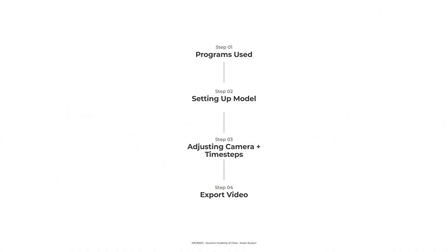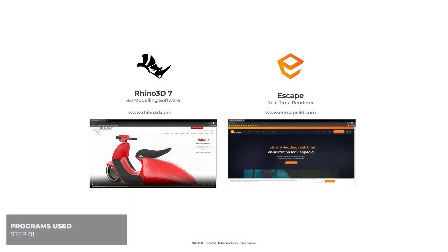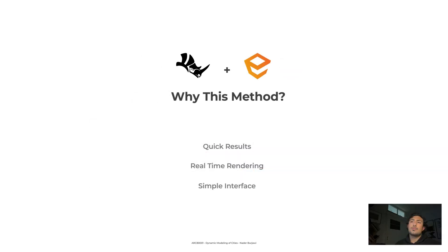Before we get started, these are the steps we will take today. We'll be using two main programs: Rhino and Enscape, and you can download both from their websites. Unfortunately they're not free, but you can use your student license if you're a student. This method has its limitations but it's really good if you want to quickly capture a site view or a bird's eye view of your site using a model you have.